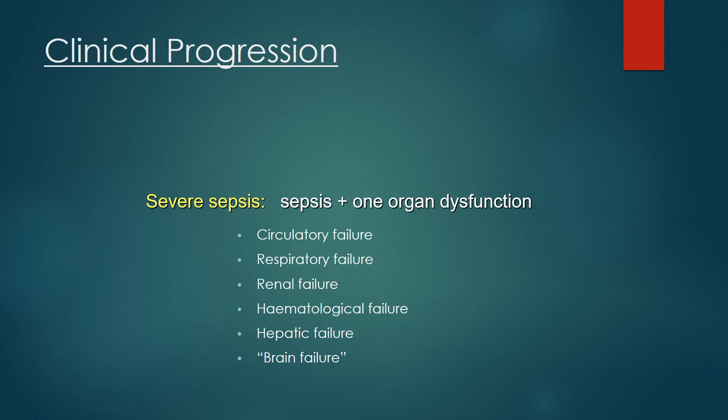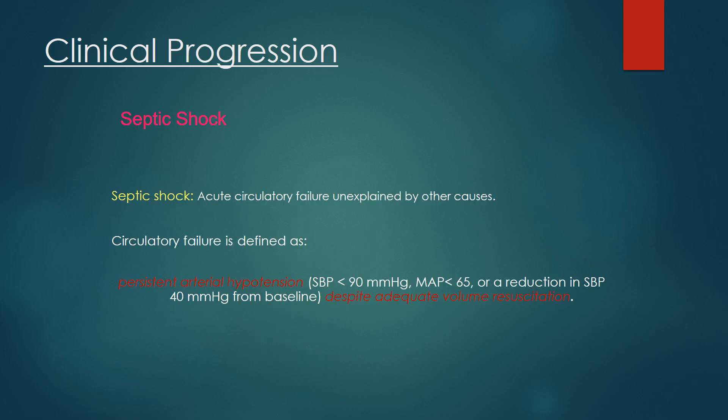Severe sepsis is sepsis plus one organ dysfunction, including circulatory failure, respiratory failure, renal failure, hematological failure, hepatic failure, or brain failure.